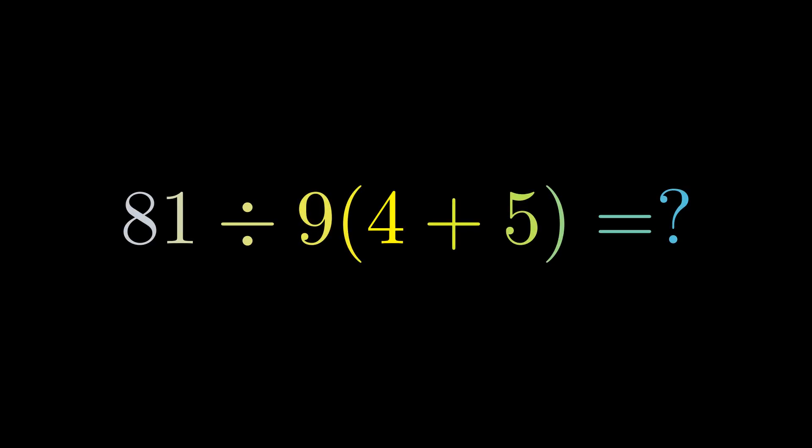81 divided by 9 times the quantity 4 plus 5. Pause the video — what's your answer? Now here's the twist: depending on how you read this, you could get a completely different result. And both readings follow mathematical logic. Let's break down why this single expression creates such massive disagreement.